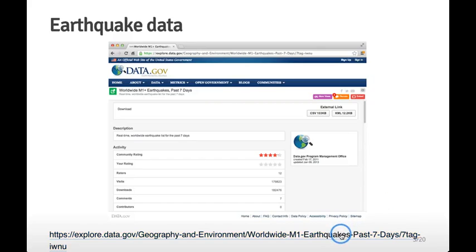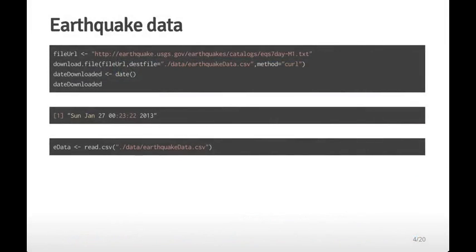Here is the URL for the data set. We use the download.file command we learned about in the getting data lectures, passing the file URL to download.file and assigning the data set to the earthquakedata.csv file. These slides were created on Sunday January 27, 2013. Then we read the csv file using read.csv and now we have it stored in the edata variable.